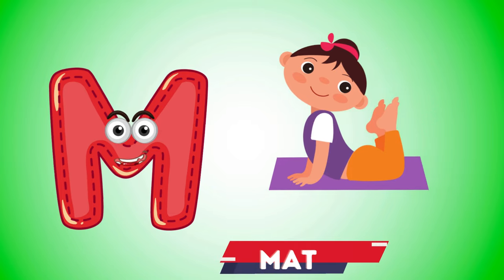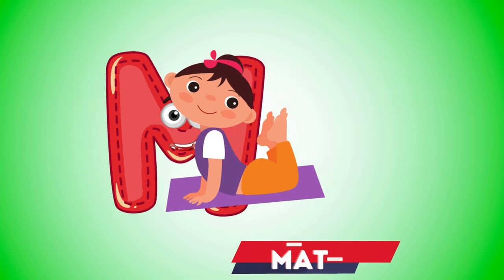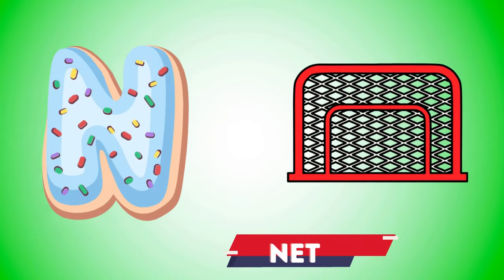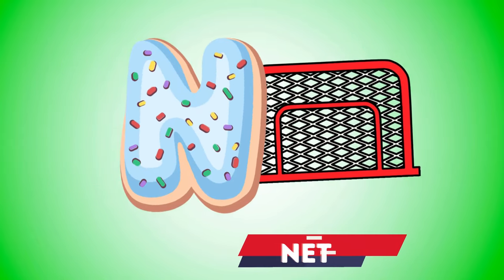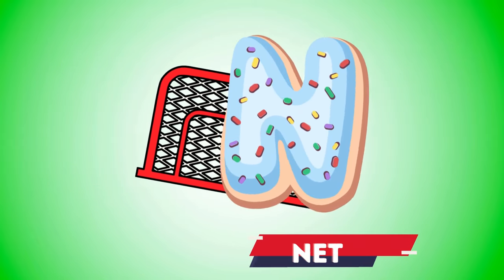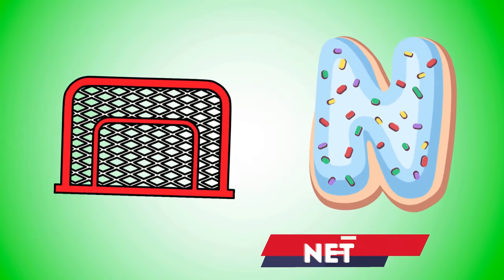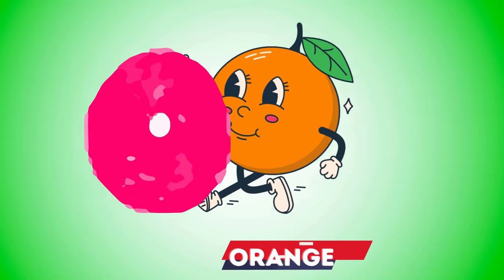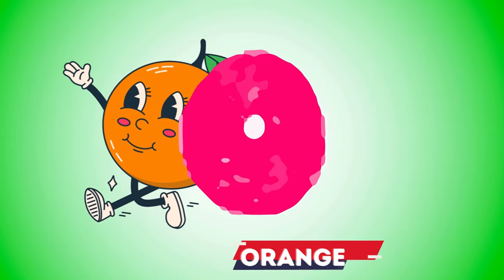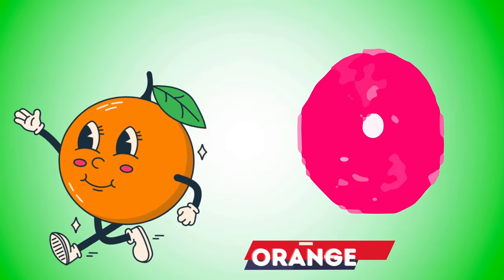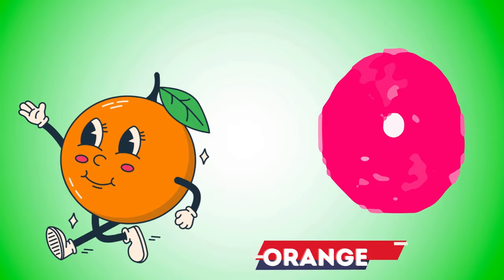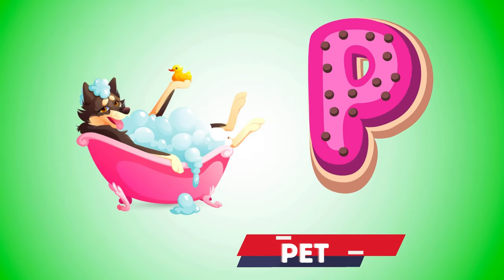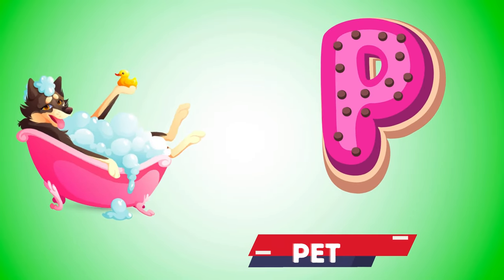M is for mat, m-m-mat. N is for net, n-n-net. O is for orange, o-o-orange. P is for pet, p-p-pet.